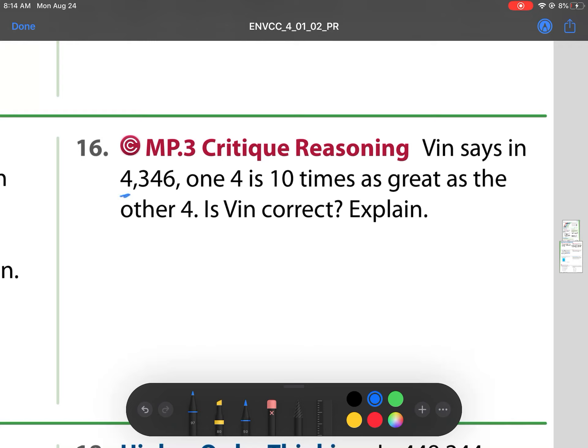Vin says in 4,346, one four is ten times as great as the other four. Is Vin correct? Let's check. We have these two fours. Is this one ten times as great as that one? Well, let's see. We have 40 times 10. And is 40 times 10 equal to 4,000? No. That's equal to 400. So, they're not equal. So, is he correct? Our answer is no.